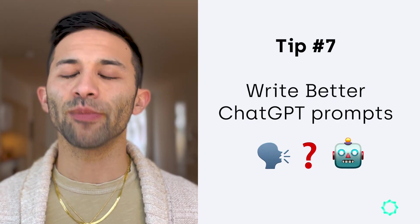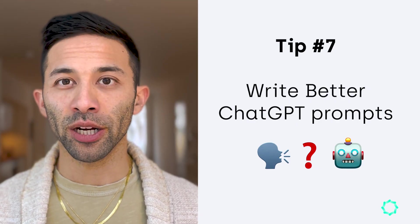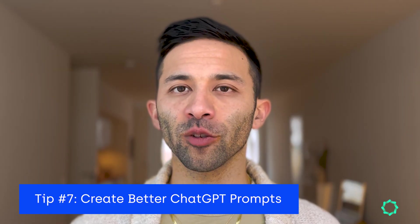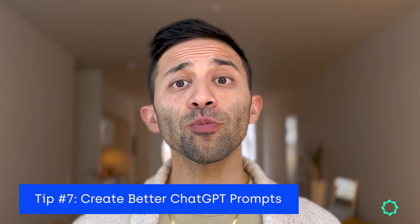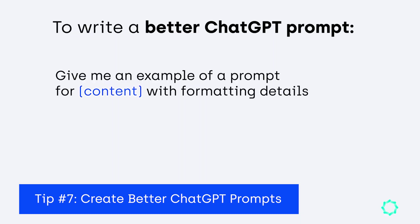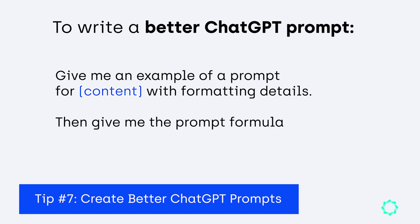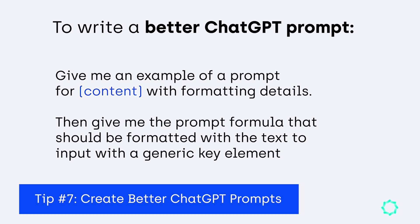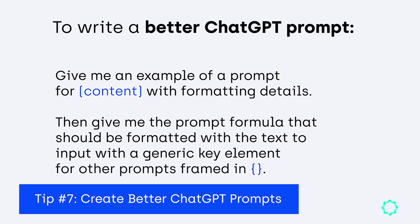Tip number seven is about writing better prompts. You can ask ChatGPT for prompt formulas. The prompt here is: give me an example of a prompt for a type of content with formatting details, then give me the prompt formula that should be formatted with the text to input and with a generic key element for other prompts framed in brackets.